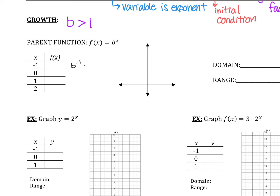It's not negative — what does it do? It flips it. A negative exponent moves it to the denominator, so it becomes 1 over b to the 1st. We don't typically write that b to the 1st — we just say it's 1 over b.